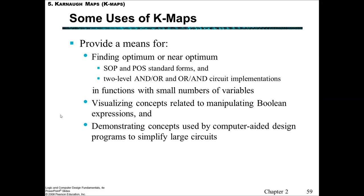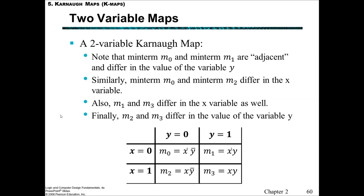The K-map has a number of different uses. It provides us a means for finding the optimal or near-optimum sum of products or product of sums standard forms — a near-optimum two-level AND-OR and OR-AND circuit implementations where the functions only have a small number of variables. It allows us to visualise concepts relating to the manipulation of Boolean expressions, and we can use it to demonstrate the concepts used by computer-aided design programs that simplify large circuits.